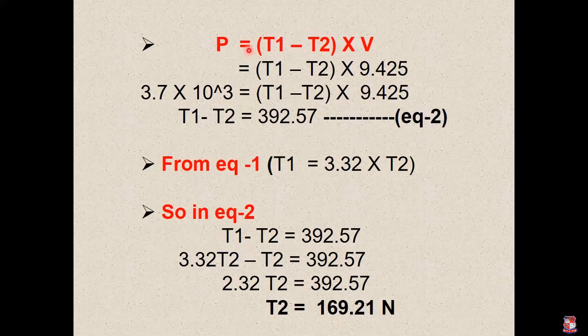We have the equation of power. Power is equal to T1 minus T2 into velocity V. We have the value 9.425. Now we have the value of T1 minus T2.